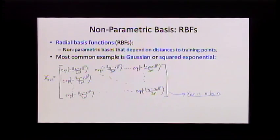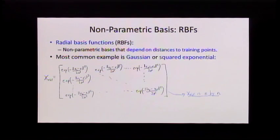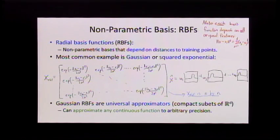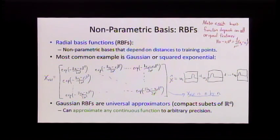To use RBFs you make your X matrix — your basis matrix — as an N by N matrix. It gives the pairwise distances between all N training examples, so there are N-squared elements. Your Yi hat can be thought of as W1 times a bump at X1, W2 times a bump at X2, up to Wn times a bump at Xn. You can show that these basis functions are universal approximators on any compact subset of R^d: if your data lives in some restricted range and you keep placing basis functions there, you can approximate any continuous function to arbitrary precision if you get enough data, effectively solving the regression problem with tons of data.